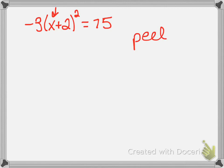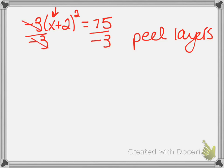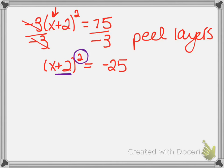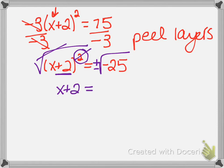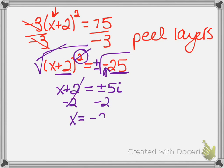We just start moving stuff away from x. Our first step is to divide both sides by negative 3, so we get x plus 2 squared equals negative 25. We can't move the 2 until the square is gone, so the next step is to square root both sides, remembering plus or minus. The square root and the square cancel, leaving x plus 2. On the right side, the square root of 25 is 5, and the negative makes it imaginary — so plus or minus 5i. Then subtract 2, and x equals negative 2 plus or minus 5i.